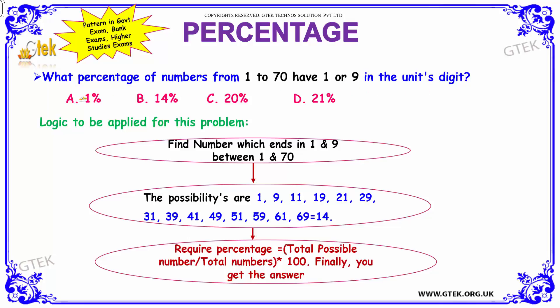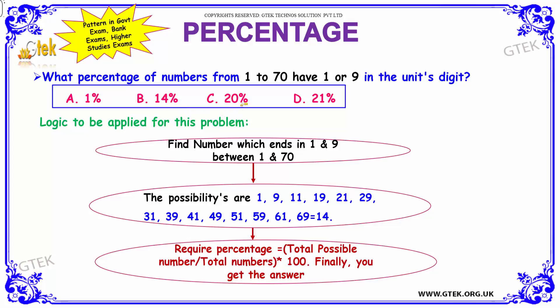We have our options as: A. 1%, B. 14%, C. 20%, and D. 21%.